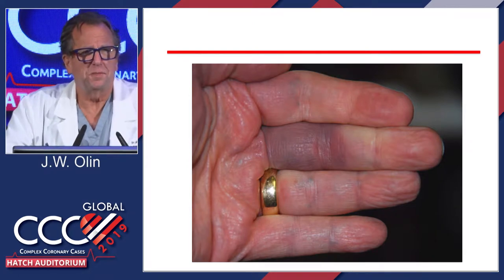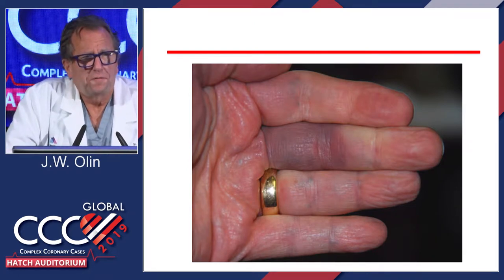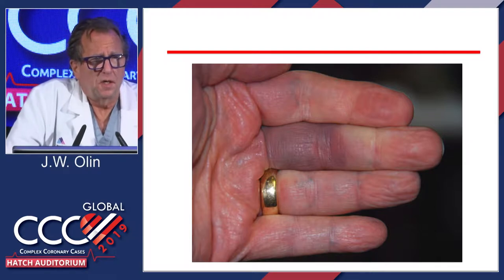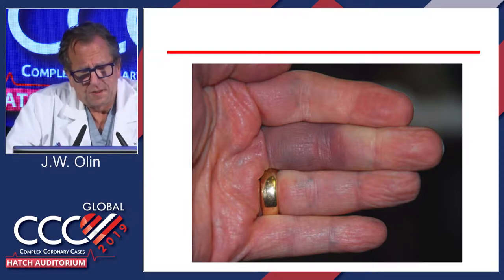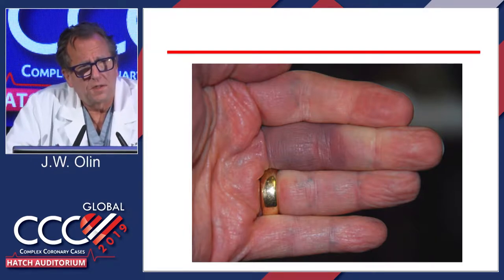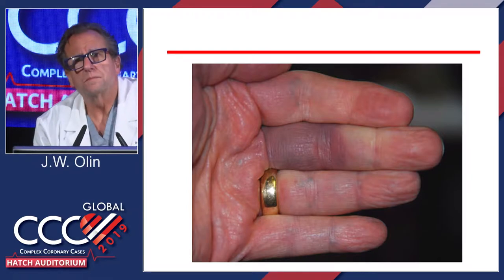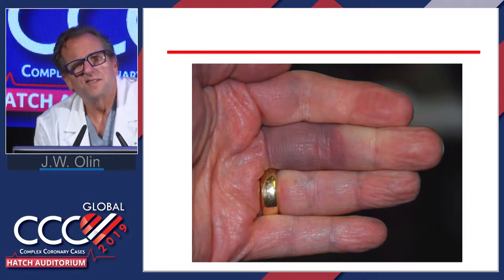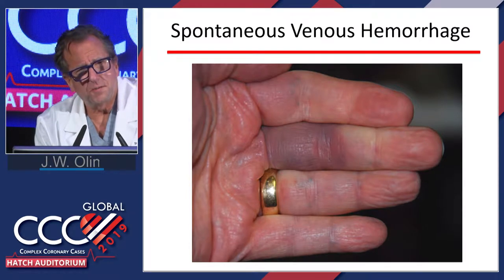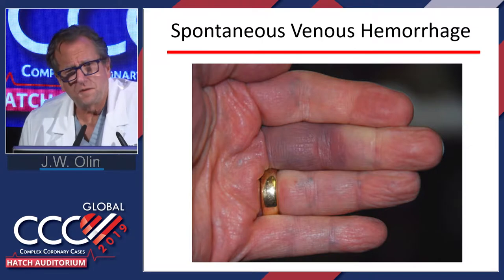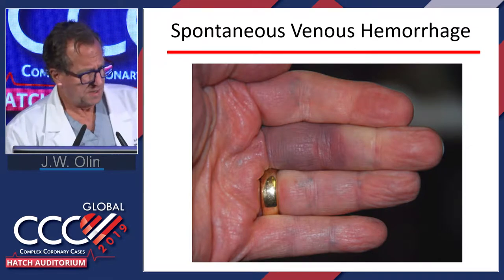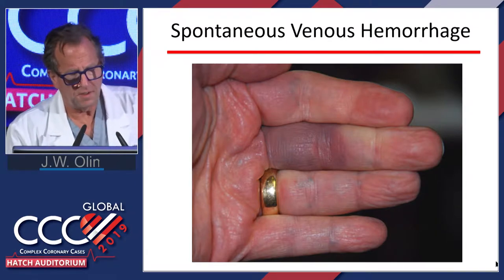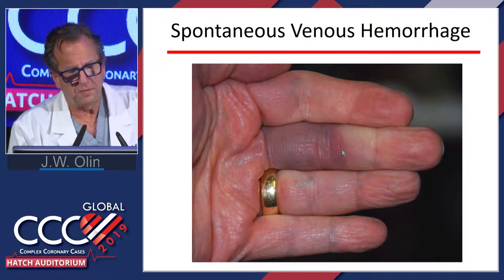This has nothing to do with intervention, but you'll be called on a Friday or Saturday night by one of your colleagues' spouses. Their finger turns this color and they're afraid they have gangrene and they're going to lose it. This is spontaneous venous hemorrhage. You can make the diagnosis over the telephone. It's non-painful, it lasts two or three days, it goes away. No one knows why it occurs.